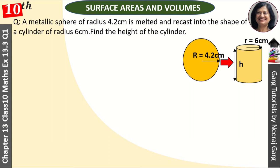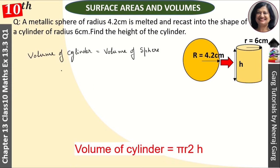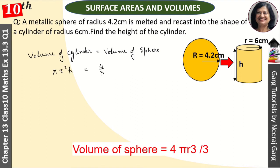When we have a question of melting, the volume is equal. So, the volume of the cylinder is equal to the volume of the sphere. The formula for volume of cylinder is πr²h and the volume of sphere is (4/3)πr³.